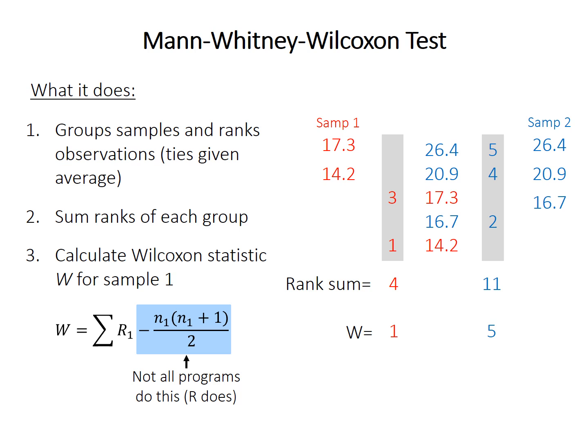Finally, it calculates the Wilcoxon statistic W for sample one. There are some differences between programs — I've illustrated what R does, but not all programs perform this subtraction. For the rest of the example, we'll work only with the rank sum for sample one, but you can try the procedure with sample two yourself to verify that you get the same p-value regardless of which sample you use.